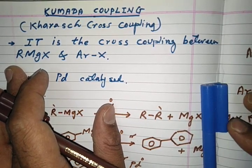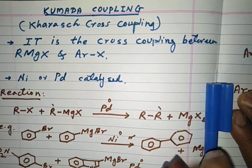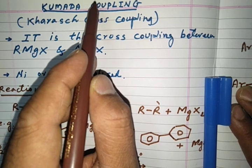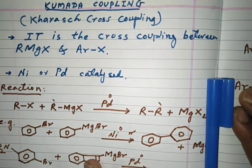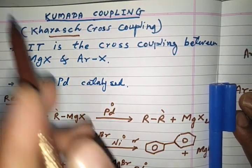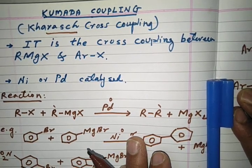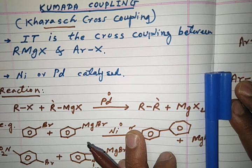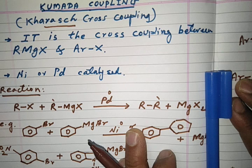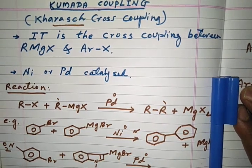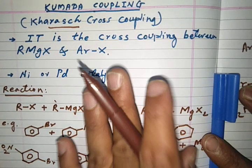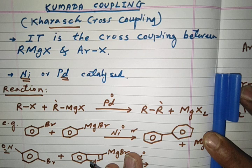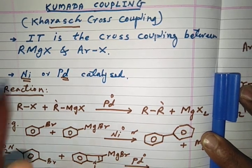Welcome back to this lecture. Today we will discuss a very important reaction from organic chemistry called Kumada coupling, or Kumada cross coupling. It is also called Kharash cross coupling. It is similar to reactions we have discussed before — Suzuki coupling, Negishi coupling, Buchwald coupling — and like other coupling reactions, this also involves formation of a carbon-carbon bond. This reaction is catalyzed by palladium or nickel-based catalyst.